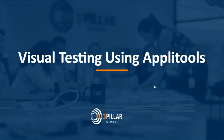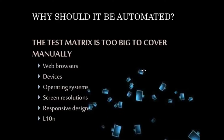Now, why should visual testing be automated rather than covered manually? A simple reason is that the test matrix is too big to cover manually, because of the explosion of new web browsers in recent years, new devices, and new operating systems. It is very difficult to cover all the test matrix manually.